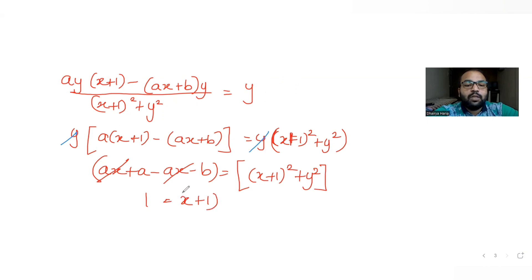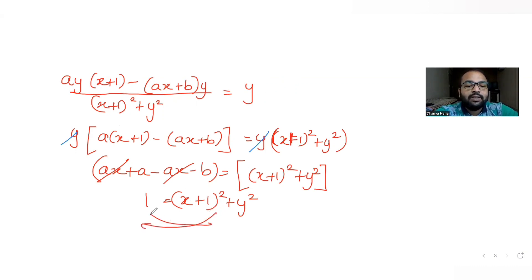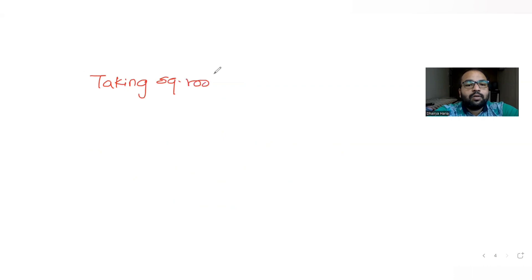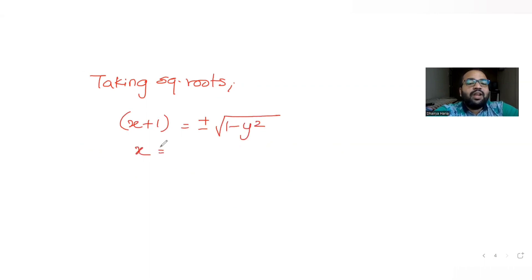Now I need to find the value of x. Rearranging (x + 1)² + y² = 1 gives (x + 1)² = 1 − y². Taking square roots on both sides: x + 1 = ± √(1 − y²). Therefore x = −1 ± √(1 − y²).